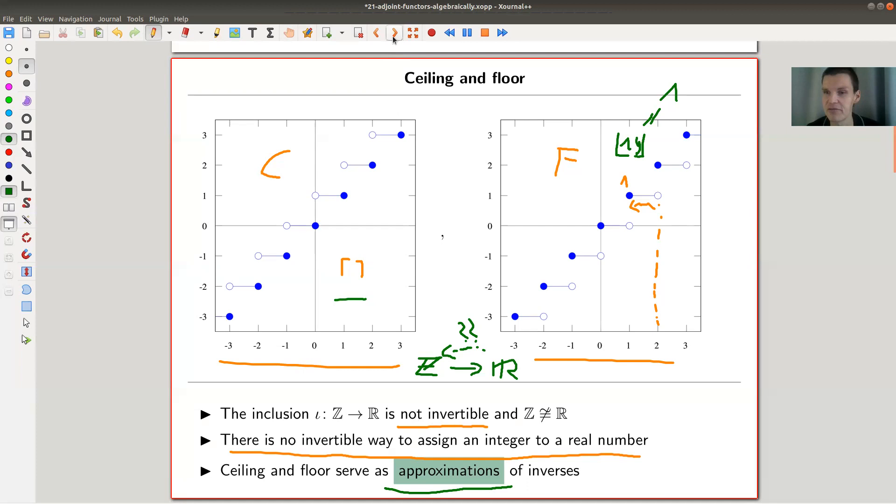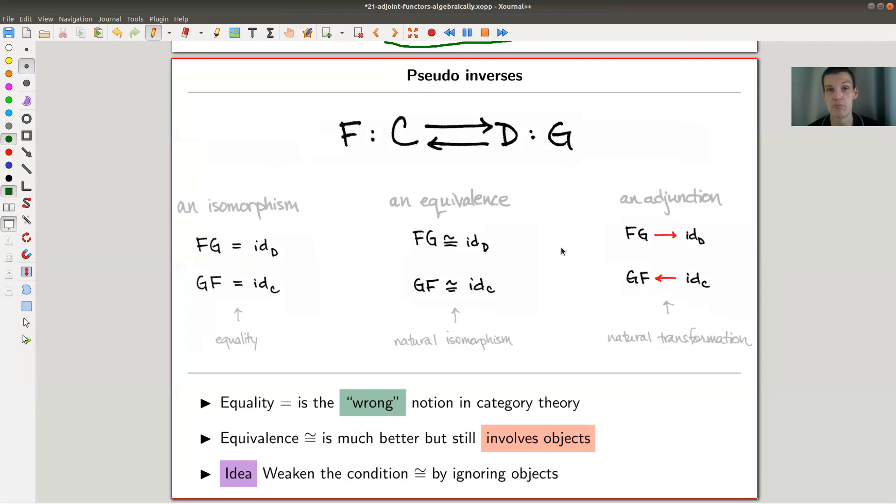And it's kind of the motivation for, well, for actual functors, they're like pseudo inverses. So if you have this picture, F and G, so F goes from C to D, the two categories, and G goes from D to C. And then there's three notions you can come up with what F and G could satisfy.